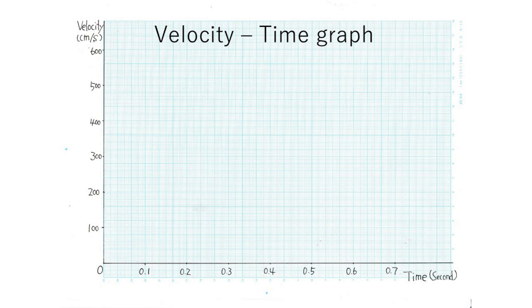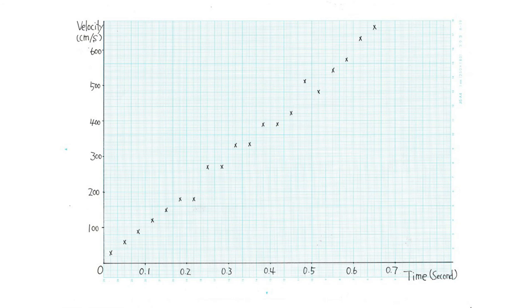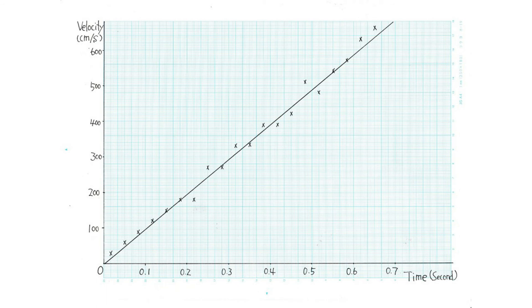The slope of this graph is the acceleration. Let's draw a graph of velocity and time. It shows a direct proportion. The slope of this graph is the acceleration. Let's calculate using these two points.